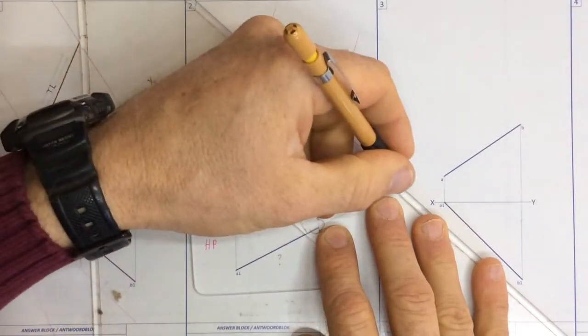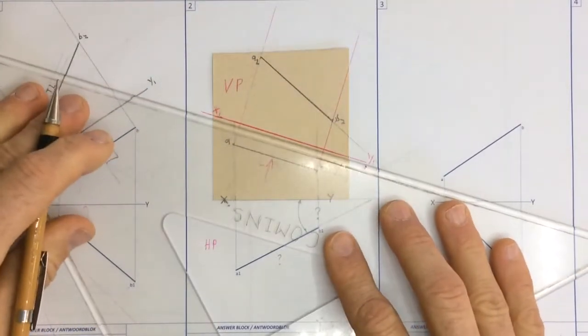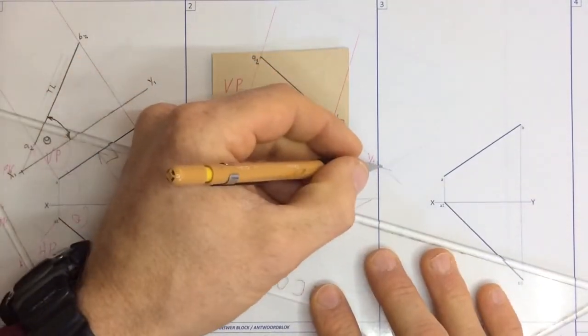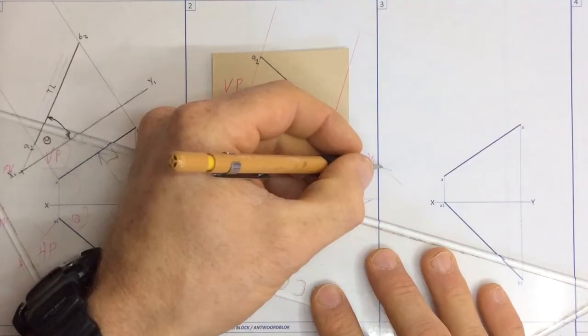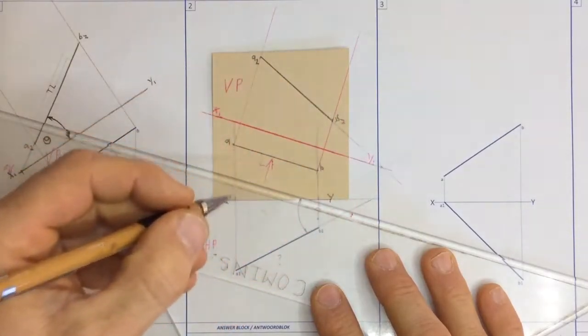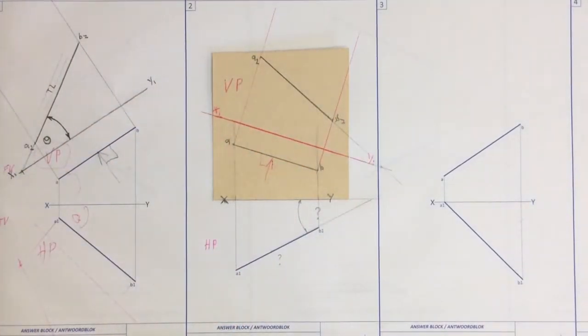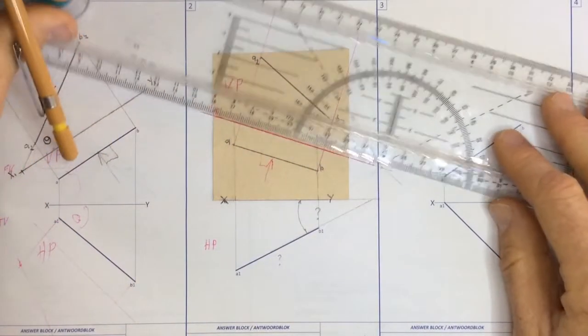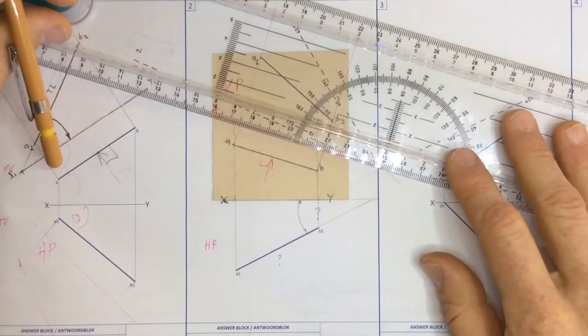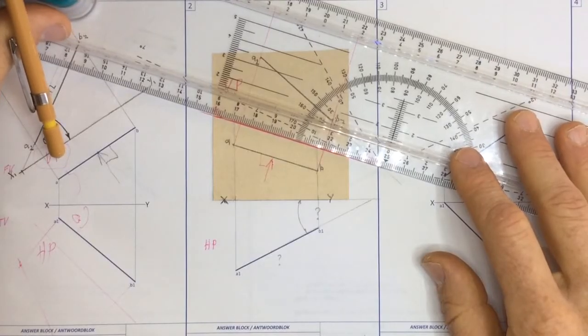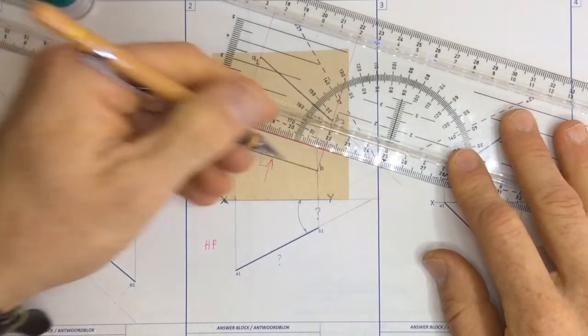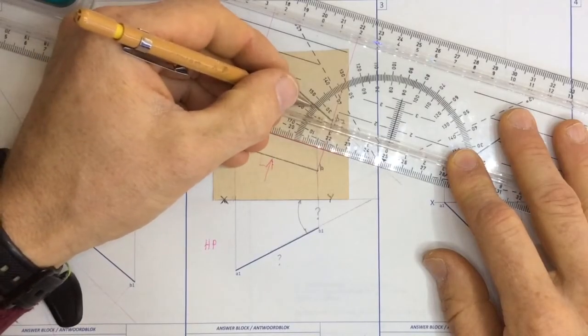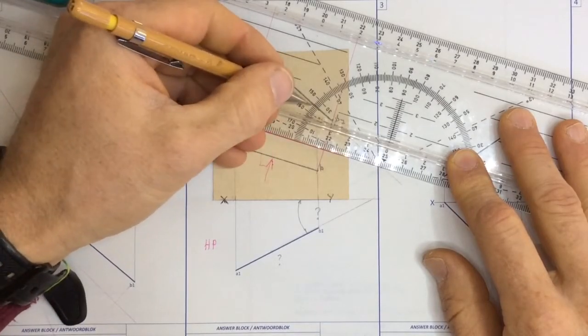And then I continue a construction line down until it cuts over my XY-axis over here. At that point over there, I can now take my protractor and I can now measure my angle over here. By placing zero on there, I measure up over here and I'm able to get 20, I think it's 26 degrees over there.